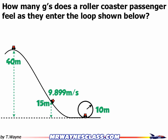In this diagram I've got a hill that's 40 meters high, and then as the car goes down it reaches a height of 15 meters and has a speed of 9.899 meters per second. It's going to enter the loop at the bottom of the hill, and the loop has a radius of 10 meters.